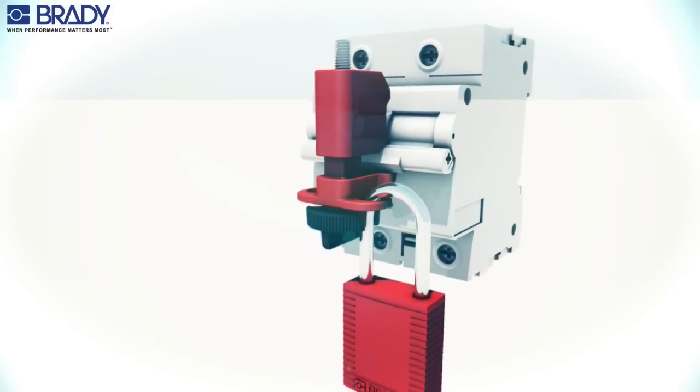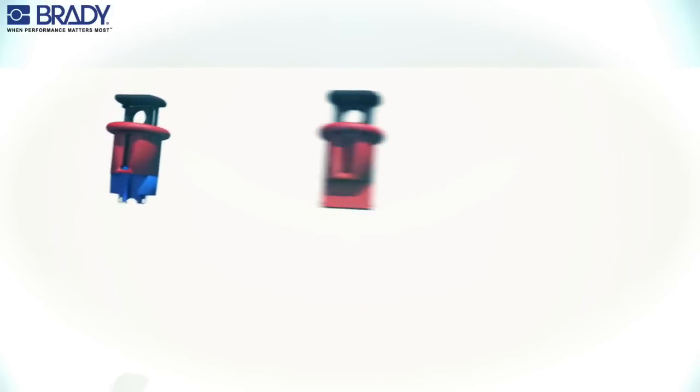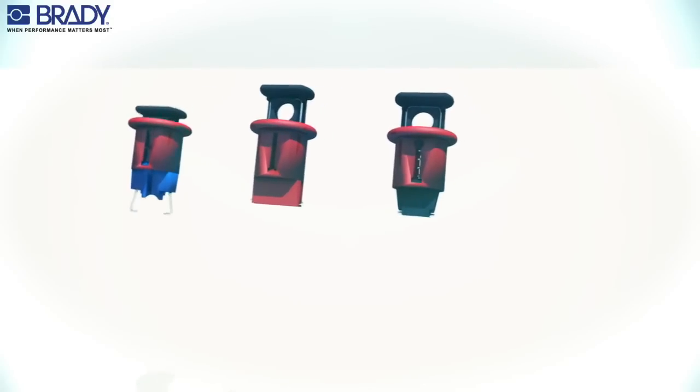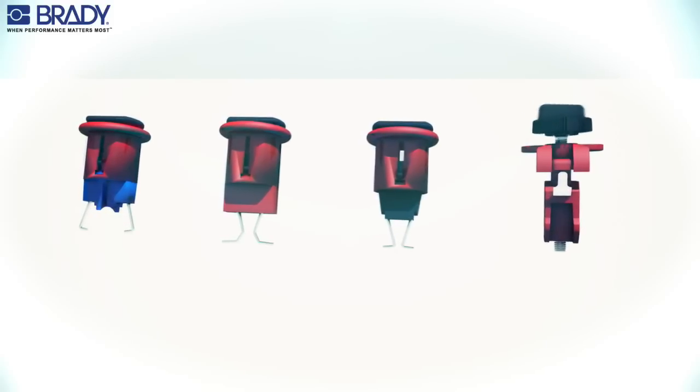Insert the padlock through the hole to secure the device in the locked position. For single pole breakers, use either the pin in device or one of the two pin out devices. For multi pole breakers, the tie bar solution is recommended.